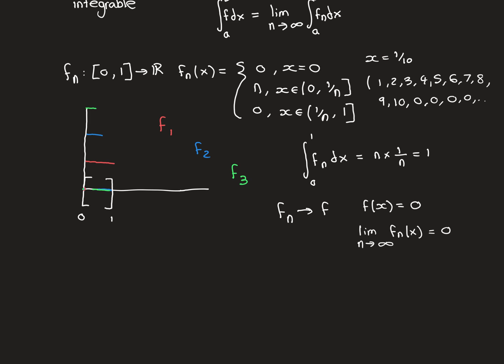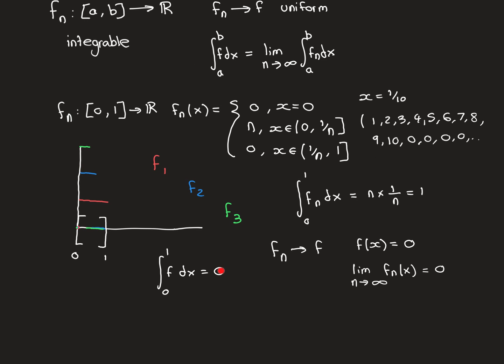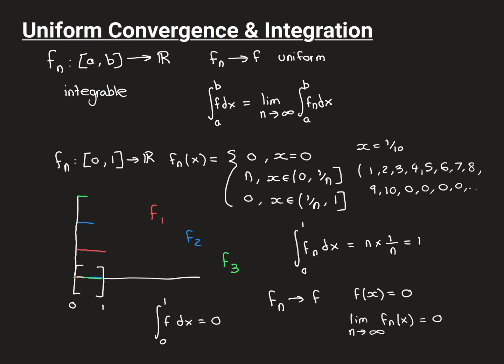So whatever point you pick, the limit of the pointwise sequence is always zero. The zero function is integrable, so our limit function is integrable, and its integral is zero. But you can see that the integral of the limit function is not equal to the limit of the values of the integrals, because all the functions in the sequence have integral equal to 1. The sequence of integral values is just 1, 1, 1, 1, ... which has limit 1. So this equality fails.